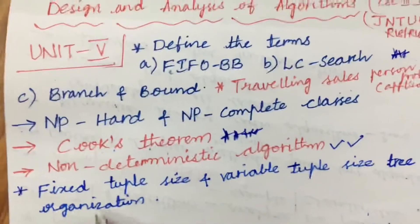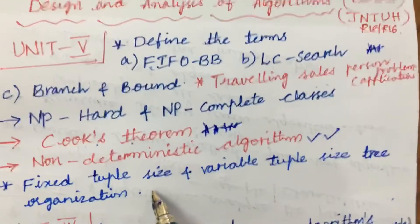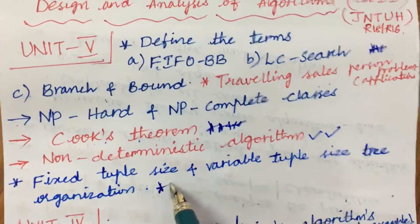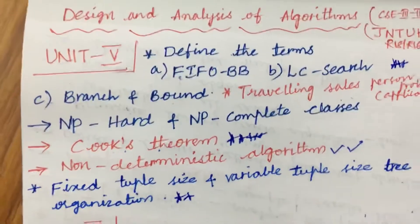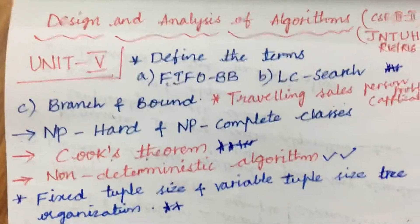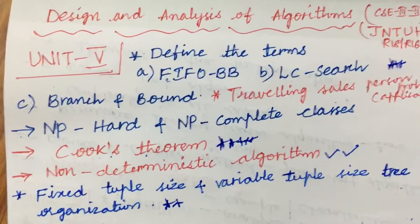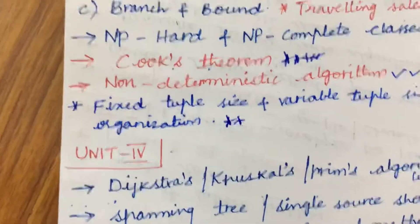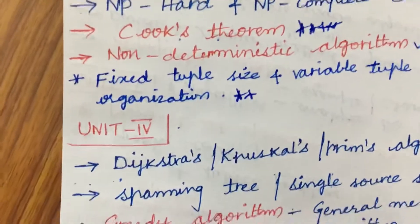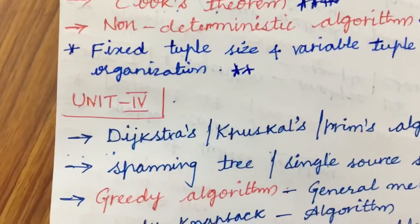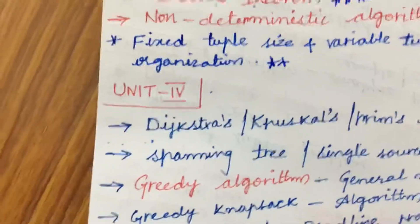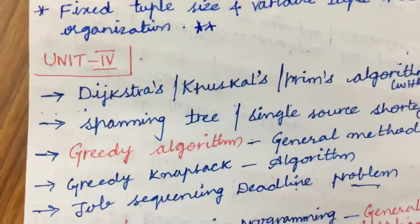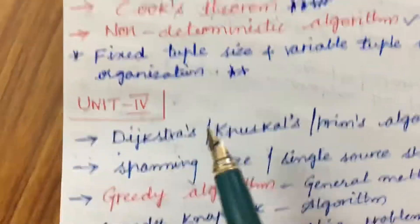Fixed tuple size as well as variable tuple size tree organization is also asked for 8 marks — the very shortest unit, please do work out accordingly. The fourth unit is also a bit small, where you are going to work out certain algorithms.